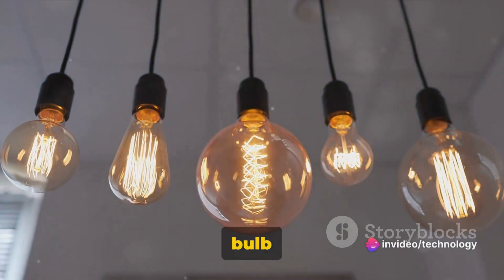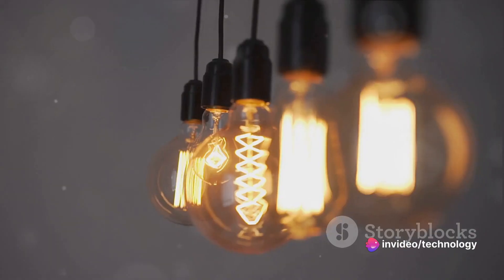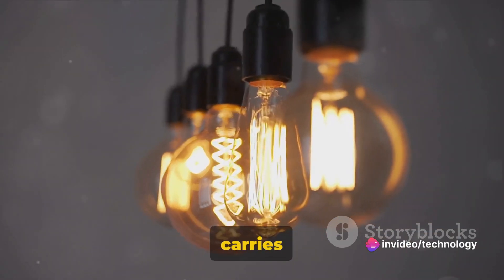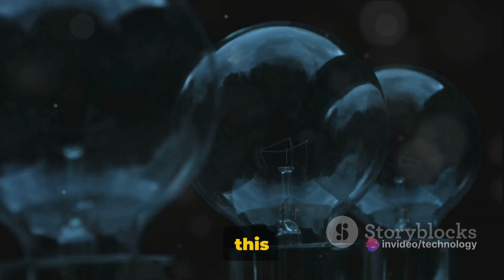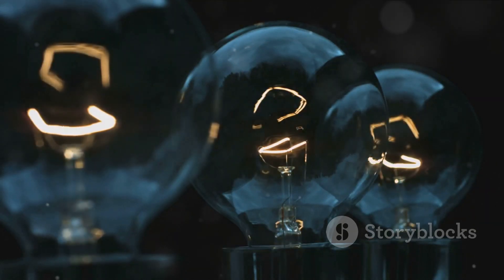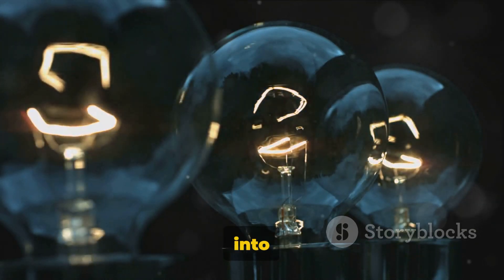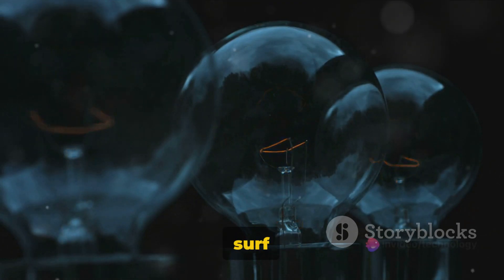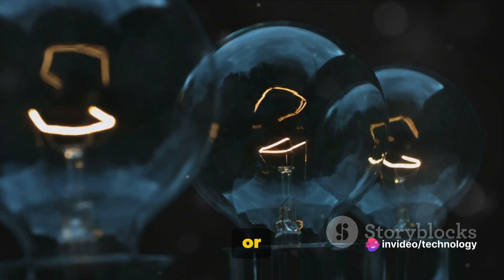But how does this current light up a bulb or power a computer? Well, the flow of electrons carries energy. In a light bulb, this energy is transformed into light and heat. In a computer, it's converted into different forms of energy that allow you to surf the web, play games, or write emails.